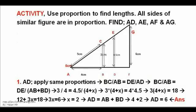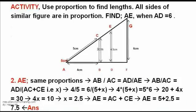Activity 1. Use proportions to find lengths. All sides of a similar figure are in proportion. BC to AB equals D to AD. Solving leads to AD equals 6. The answer — see image.